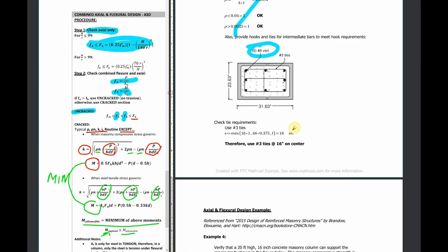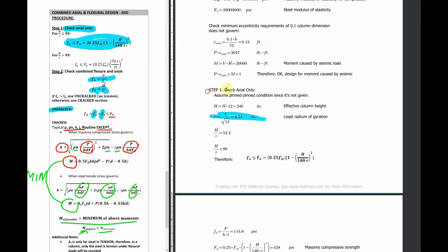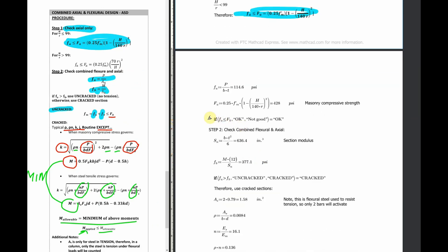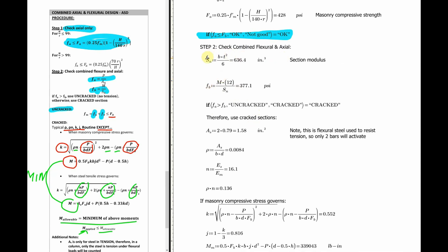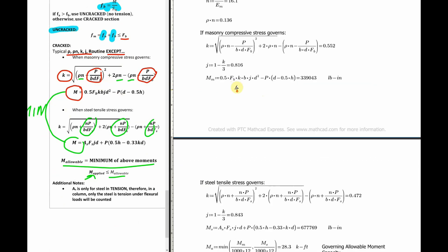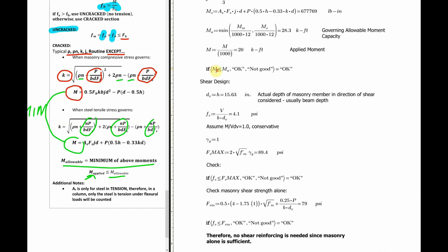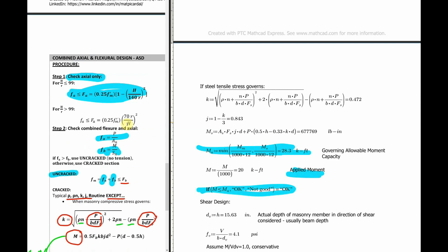I have a combined axial and flexural example as well. Starting with step one, we find H and R and run the same axial checks. Then in step two, to find the applied bending stress, you find the section modulus — which is straightforward — then check cracked or uncracked. In this example, FA is greater than FB, therefore it is a cracked section. So we use all the cracked-section formulas. Just plug and chug through the equations to find the minimum allowable moment MA, then check it against the applied moment. That's the check for combined axial and flexural design.